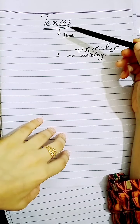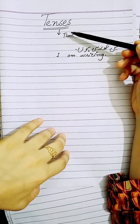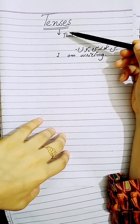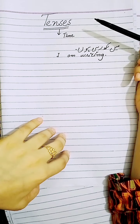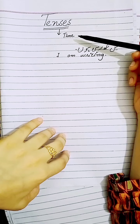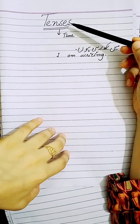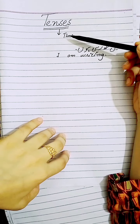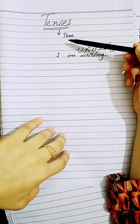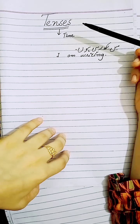Tenses are basically the rules of grammar which show us when the work has been done. Basically we can say that tenses show the time — the time tells us that some work has been done.